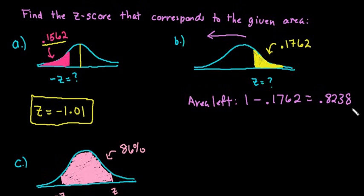And so since we're looking for .8238, which is more than 50%, remember that the 50% mark was here. So more than 50% is to the left. We are looking for a positive z-score.